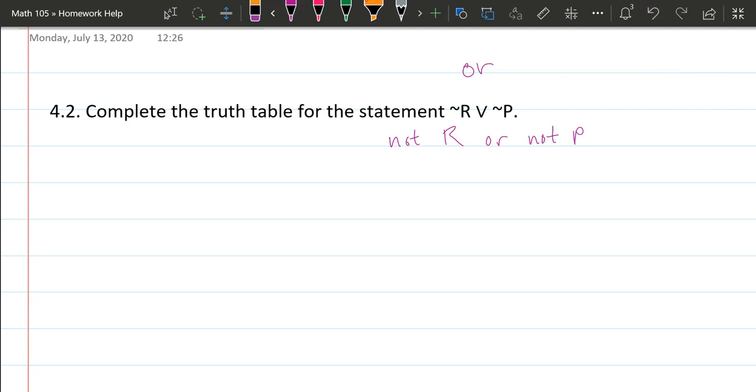We're going to set up this table here. There are two inputs: R and P. Let's go ahead—our first column will be just R by itself, and our second column will be P by itself.